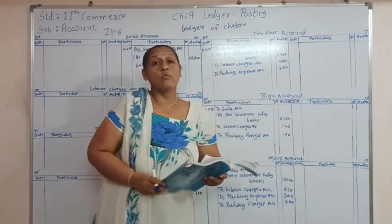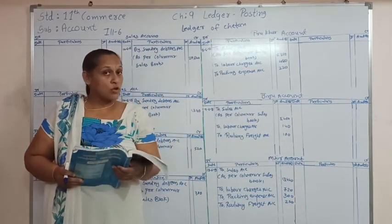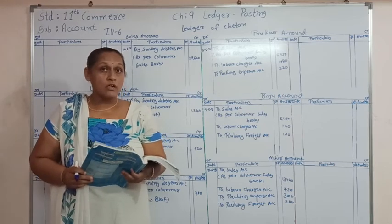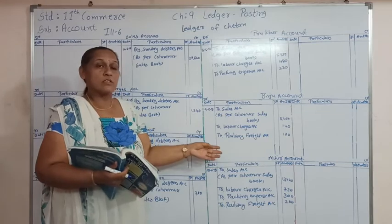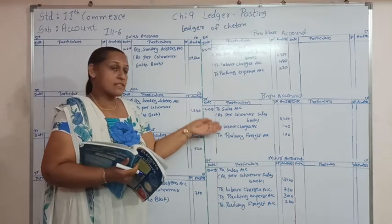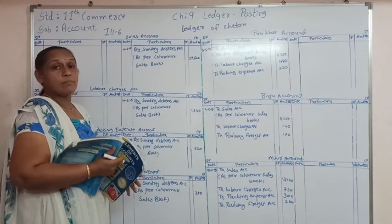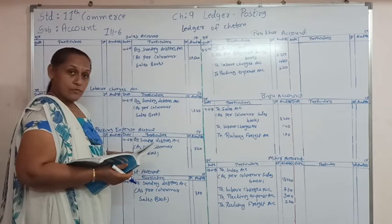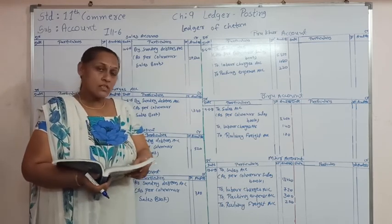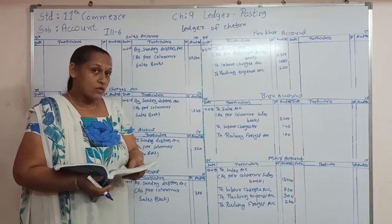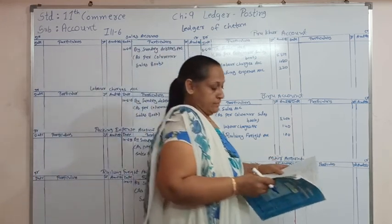This is how we are supposed to make the posting from the columnar subsidiary book. The debit side total we have to write on the debtors' account. Then the credit side total we are supposed to write in the sales account and respective expense accounts. Students, you may have done this in your notebook. Thank you for watching this video.